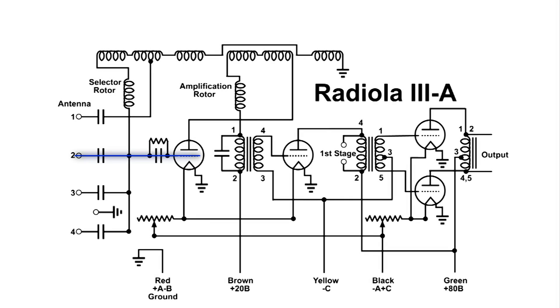Now the first tube is going to amplify that signal that's on the control grid, and it comes out of the plate, through the coils and the amplification rotor, through the capacitor. It goes around that first audio transformer because the RF frequency is too high a frequency. It cannot pass through the coil. It'll go through that bypass capacitor.